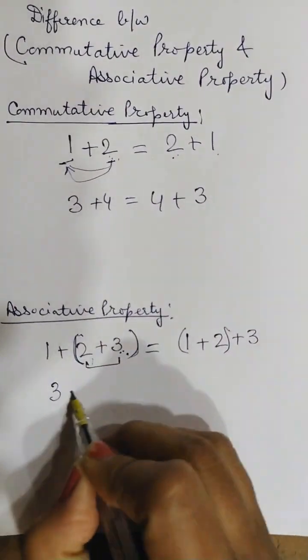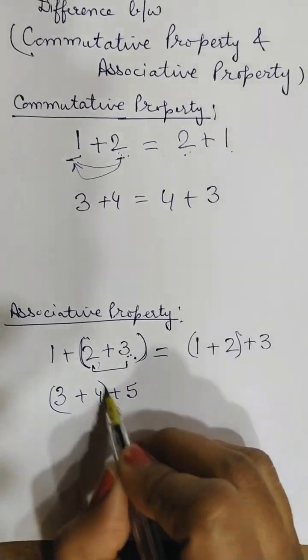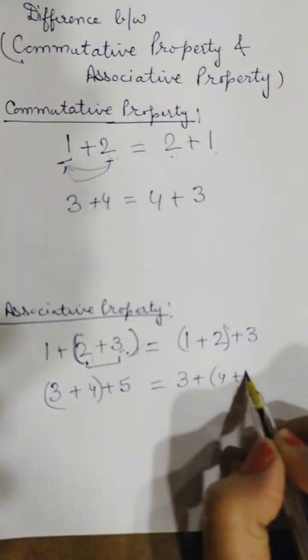Same way, if it is 3 plus 4 plus 5 like this, then at the other place it will be 3 plus 4 plus 5 with different grouping.